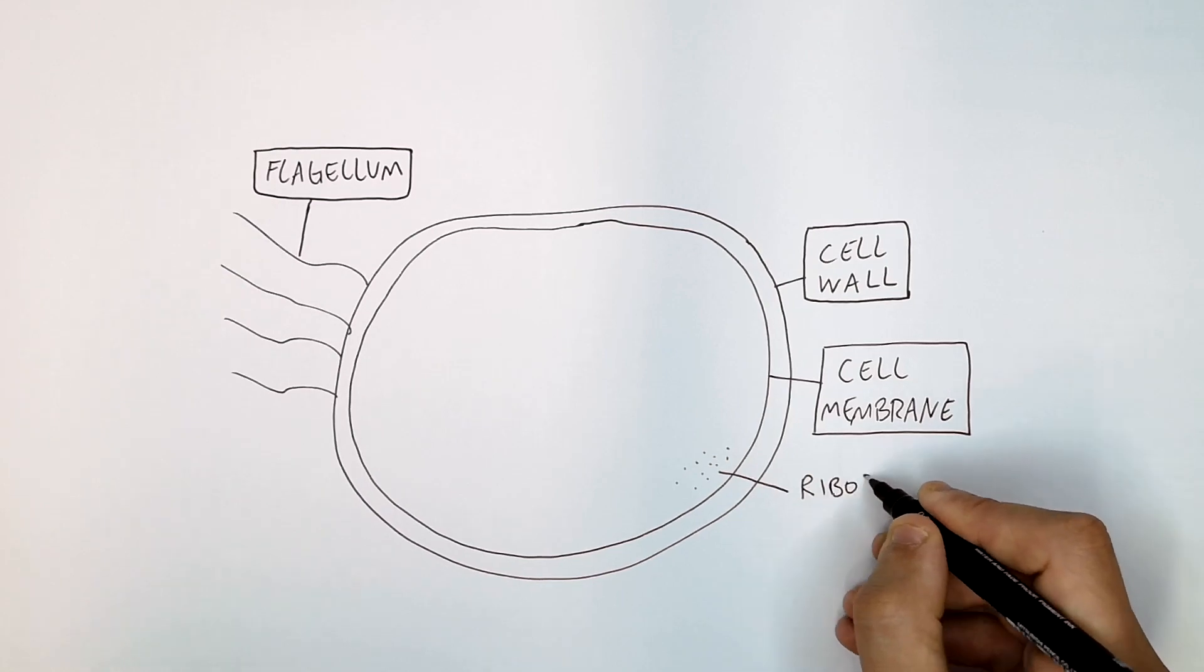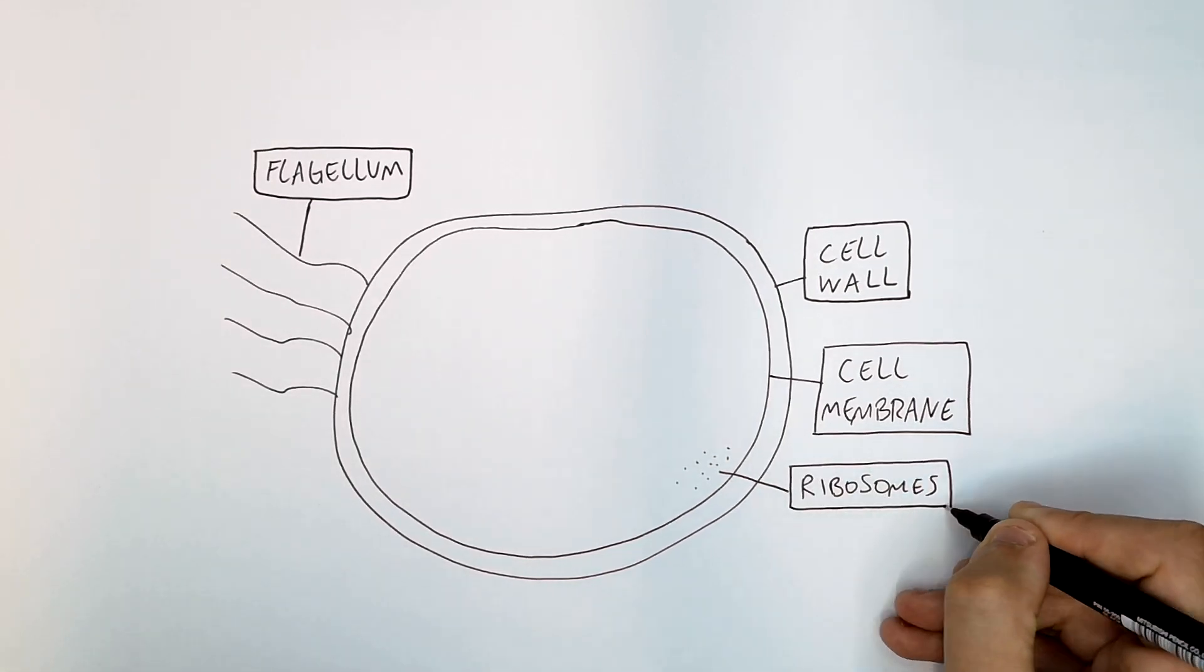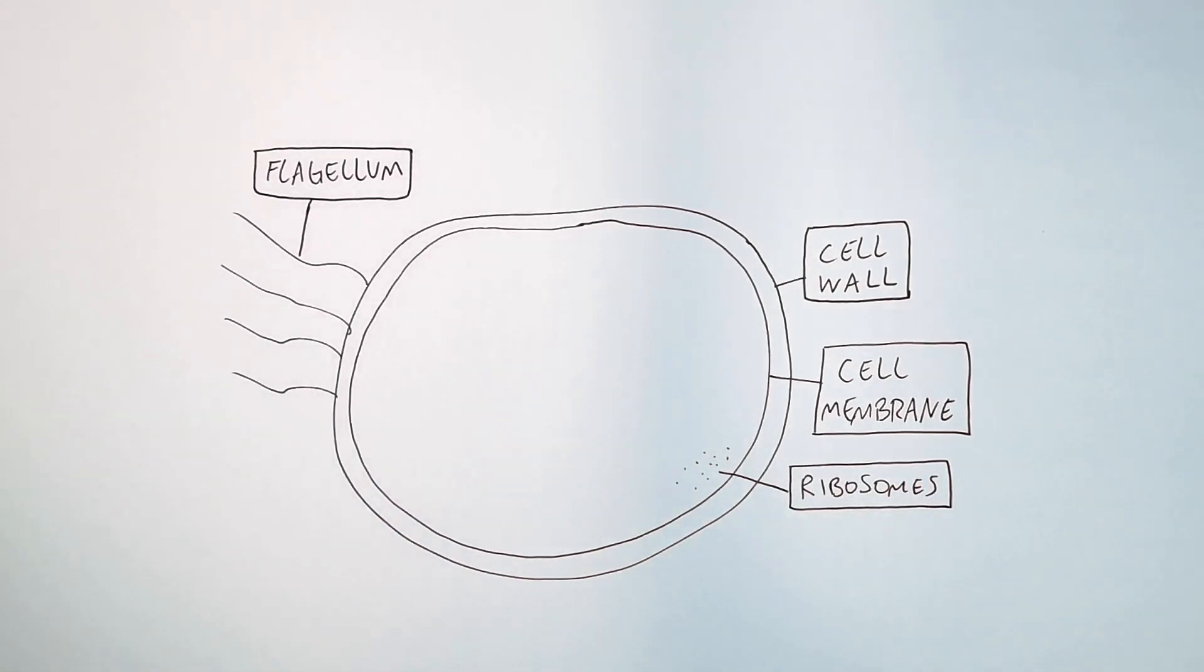Bacterial cells also have ribosomes. Ribosomes produce protein.